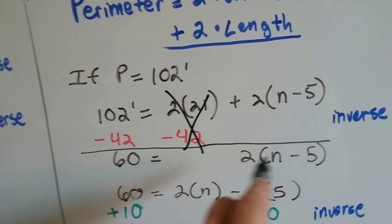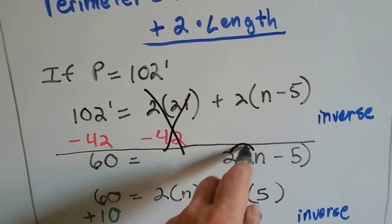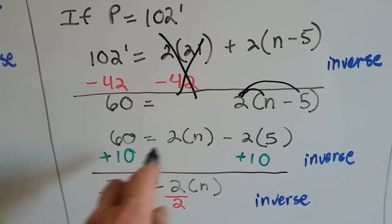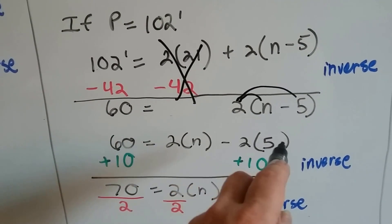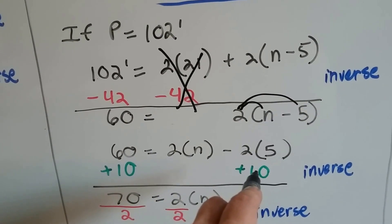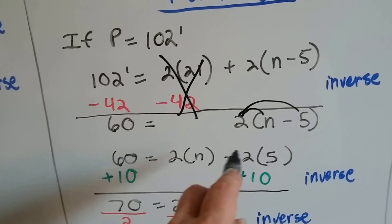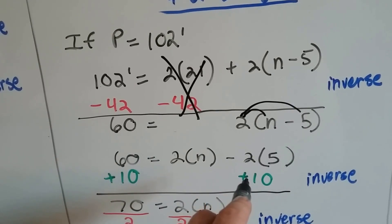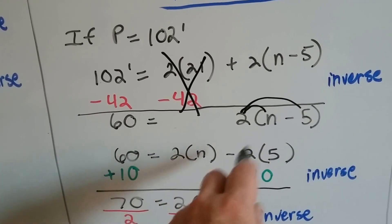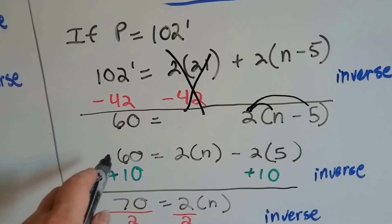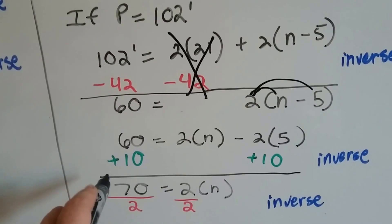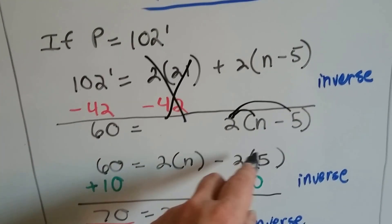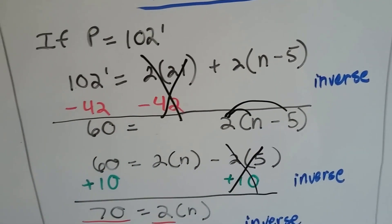This is the distributive property — this means 2 times n minus 2 times 5. We can open that up: 2 times n minus 2 times 5. We use the inverse operation — because this is subtracting 2 times 5, we know that's 10. We can add 10 to get rid of it, and the other side of the equal sign also gets plus 10. So now we've got 60 plus 10 is 70, and the minus 10 and plus 10 made zero pairs and canceled each other out.